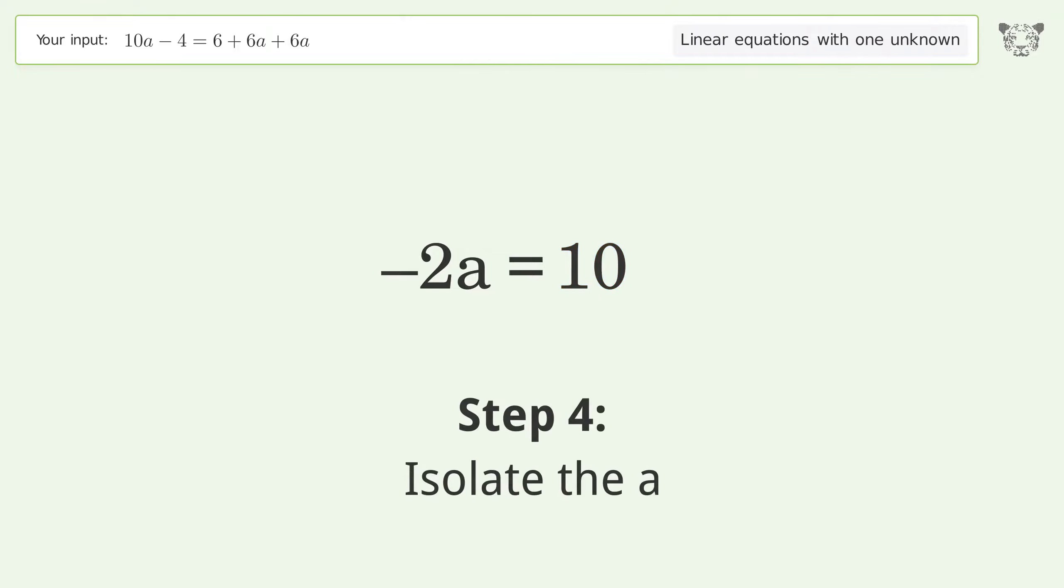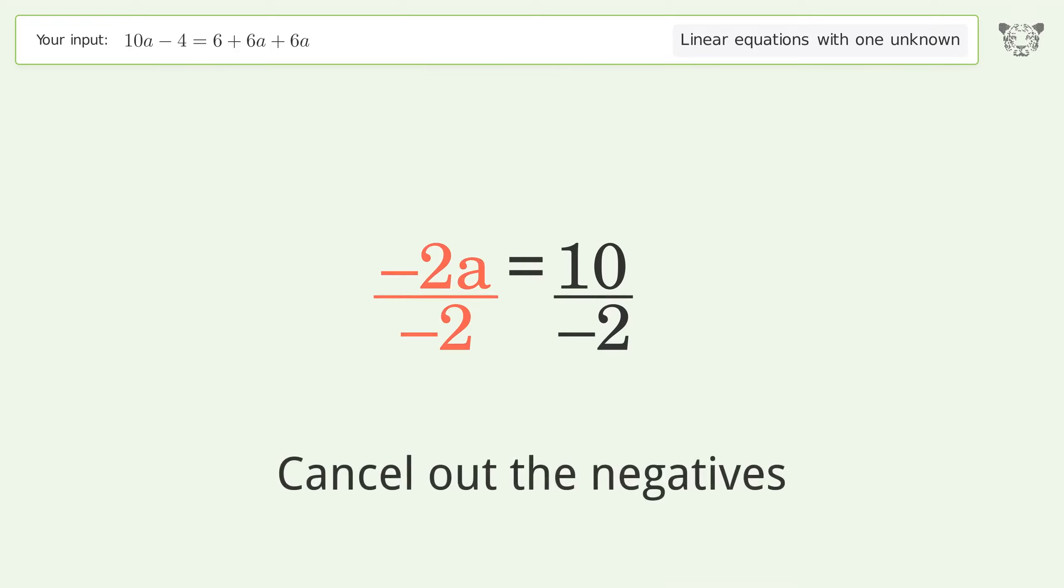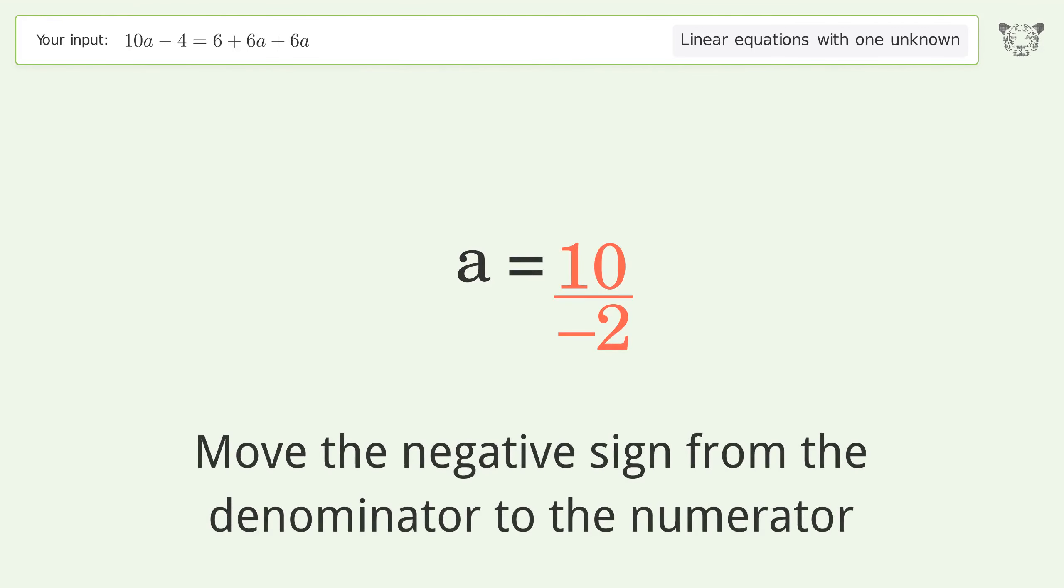Isolate the a. Divide both sides by negative 2. Cancel out the negatives. Simplify the fraction. Move the negative sign from the denominator to the numerator.